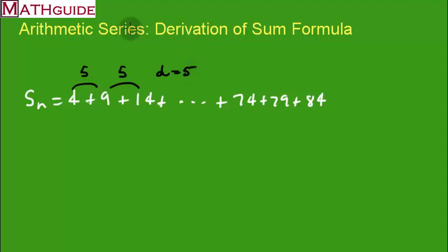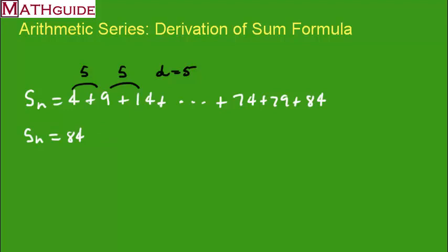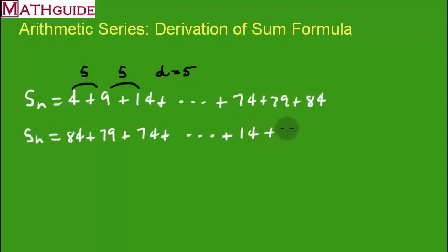If that's the common difference, let's play a little trick. If we take the same sum but write it in reverse, we put the 84 first, then 79, then 74 ... and at the end we have 14, 9, and 4.